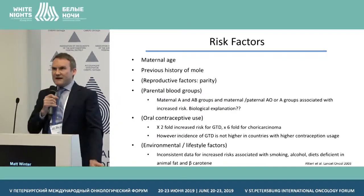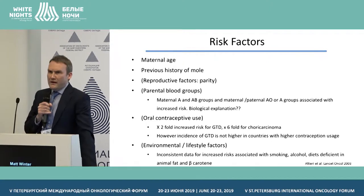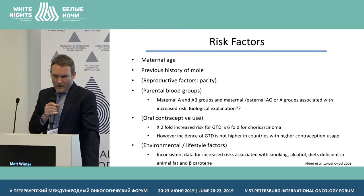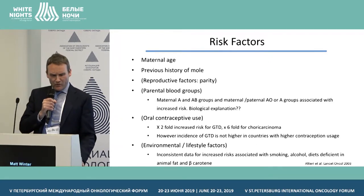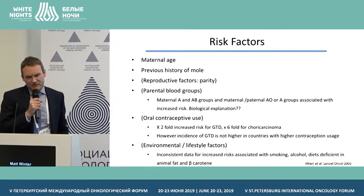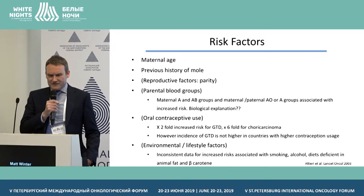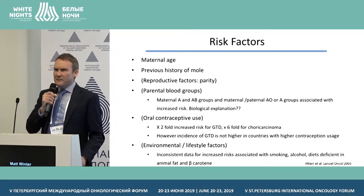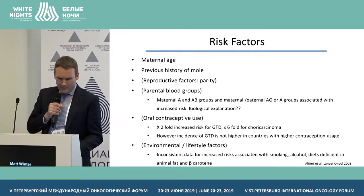What are the risk factors for gestational trophoblastic disease? The two most well-described risk factors are maternal age and a previous history of mole. Other risk factors reported in the literature include parity, parental blood groups, oral contraceptive use, and environmental and lifestyle factors, but the data here is wholly inconclusive — which is why these are left in brackets.